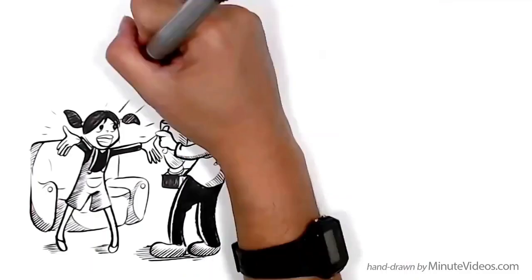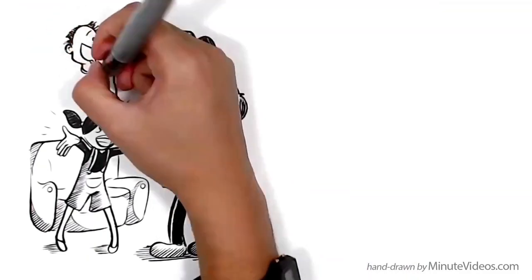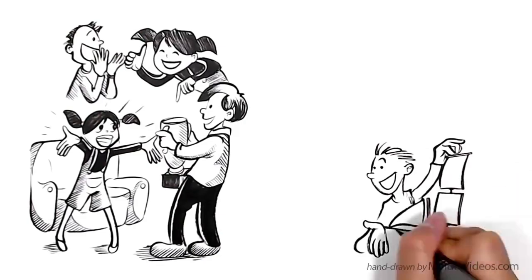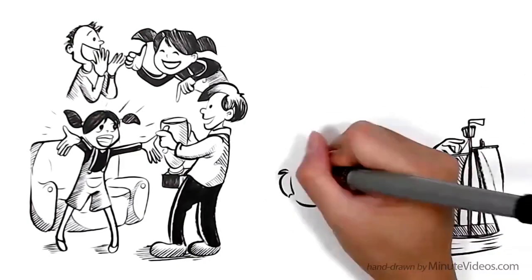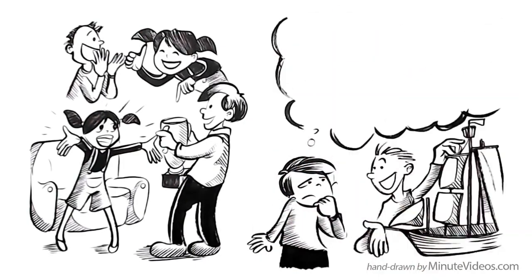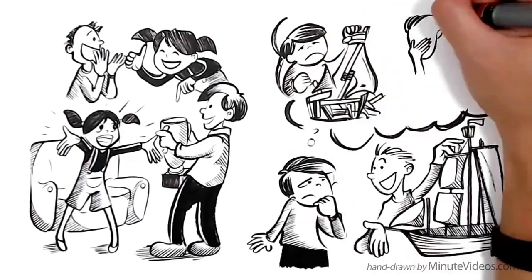Ann likes to see others succeed. It inspires her. She knows that if she motivates her friends to get better, she herself is likely to grow too. If his friends try new things and succeed, Jay feels threatened. He's afraid that their success will put pressure on him to do more with his life too.